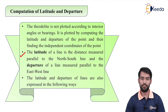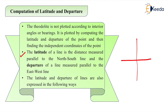Define latitude: the latitude of a line is the distance measured parallel to the north-south line. As we can see, there is north-south and then east and west. So a line parallel to the north-south line is known as latitude. If we are calculating it upwards towards north, it is noted as northing and it is always positive. If latitude is calculated towards south, it is known as southing and it is always negative.